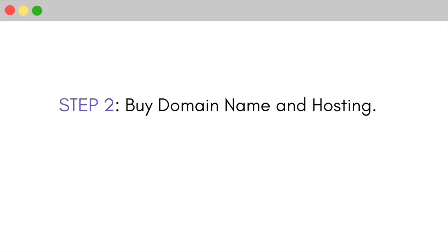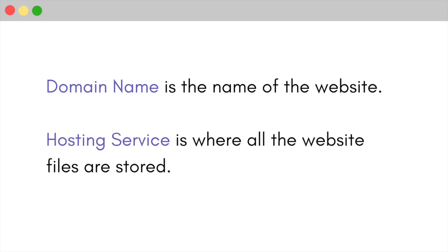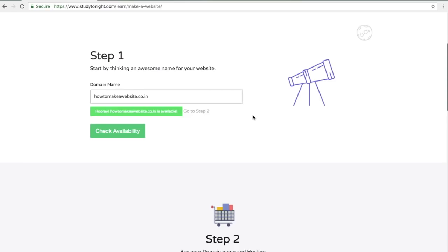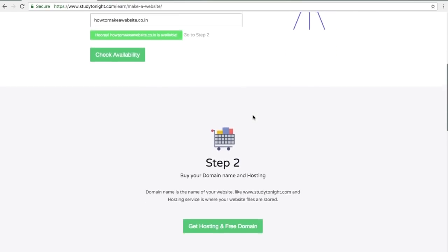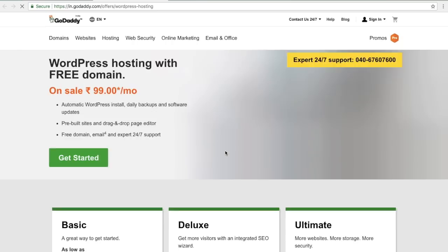In step 2 we will buy the domain name and the hosting for our website. The domain name is the name of your website, and the hosting service is where all the files of the website are stored. Now go to step 2 and click on the button 'get hosting and free domain'. It will take you to godaddy.com — click on get started.